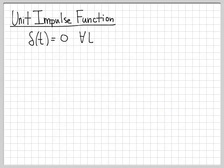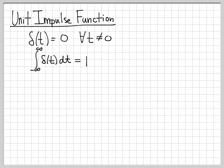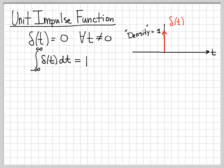Let's talk about the unit impulse function. For notation, we use δ(t), which is equal to 0 for all time not equal to 0. So this function is zero almost everywhere, but it also has the property that if you integrate it from −∞ to ∞ you get 1. When we plot this function, it's equal to zero literally everywhere, but at the origin we draw an arrow and mark it with height 1. That's not really a height — it's really a density, because we get 1 when we integrate the function. The arrow indicates an infinite height with zero width.